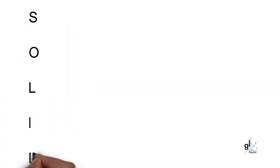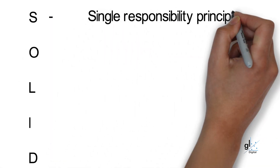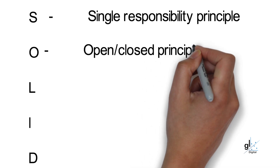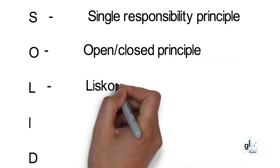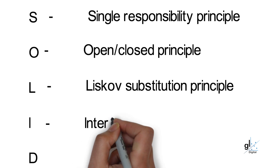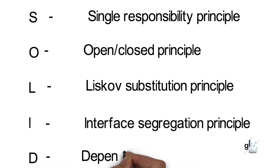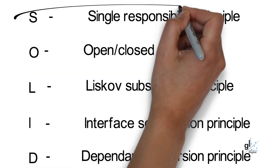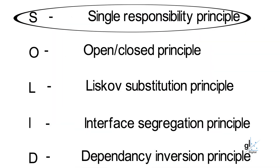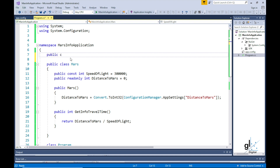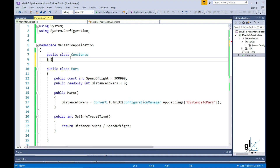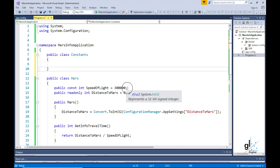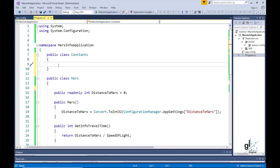Five principles are represented by the acronym SOLID in object-oriented programming. The first letter stands for the single responsibility principle, which we are violating in our Mars class. The single responsibility principle says that a class implementation should carry only one responsibility. Since the speed of light is not unique to Mars, let's establish a new class called Constants to house our named constant SpeedOfLight. The Constants class also allows for future extension — for example, adding other constant values like the gravitational constant for Earth or Mars.